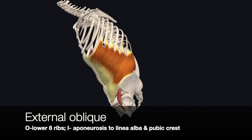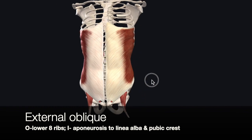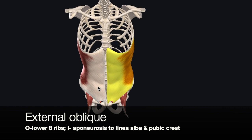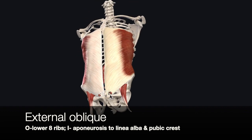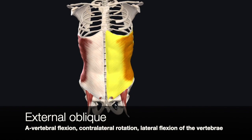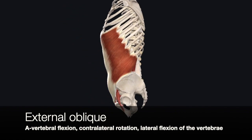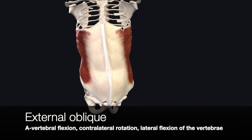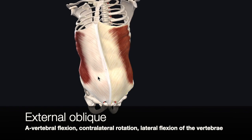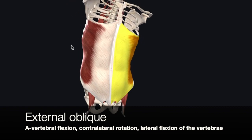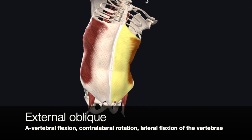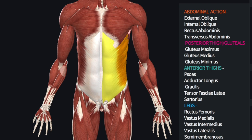Its origin is on these eight lower ribs, and its insertion is along the aponeurosis — that flat tendon — as well as the linea alba. It's also attached to the pubic crest. It's involved in vertebral flexion, as well as a vertebral twist, so it has a twisting action. The left external oblique will cause a right rotation, a front-to-back rotation. Its last action is a lateral flexion of the vertebrae.